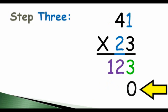In step three, notice that there is a zero under the green 3. This is because we are multiplying by our tens digit in the lower number or the 2 of the 23. The zero is a placeholder.